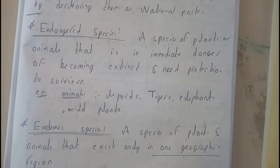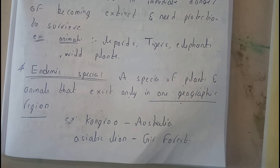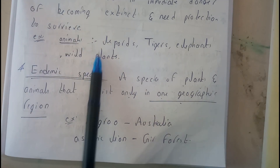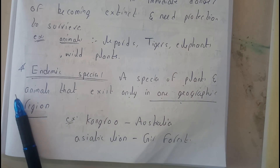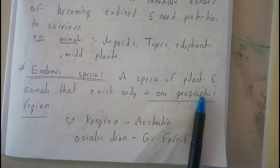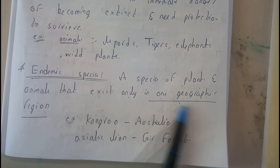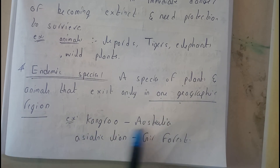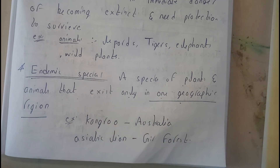You need to remember the key difference: endangered means they are going to go extinct, while endemic means they can only grow in a particular region. Endemic species are plants and animals that exist only in one geographical region. Examples include kangaroos in Australia and Asiatic lions in Gir Forest.